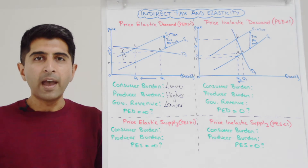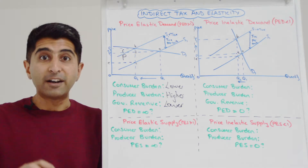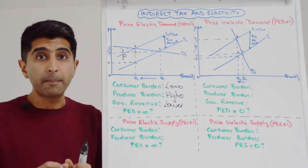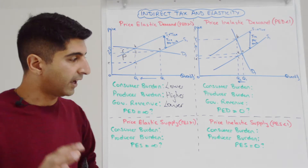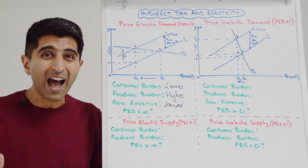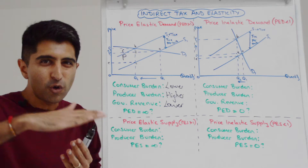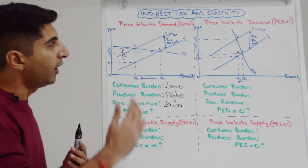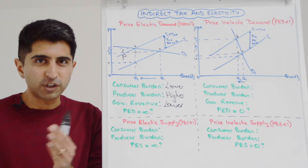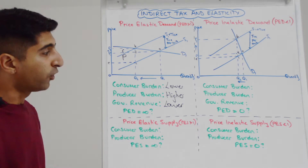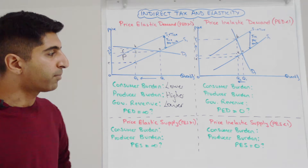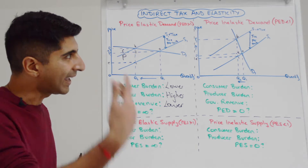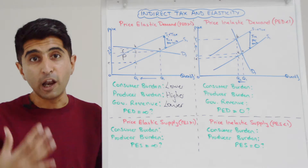If we go to the extreme and assume demand is perfectly price elastic, the consumer burden will be nothing and the producers take the entire burden. If you imagine a completely horizontal demand curve, when the supply curve shifts upwards there will be absolutely no change in price, so the consumer burden is zero, the producers take everything, and government revenue will be at its lowest in that situation.